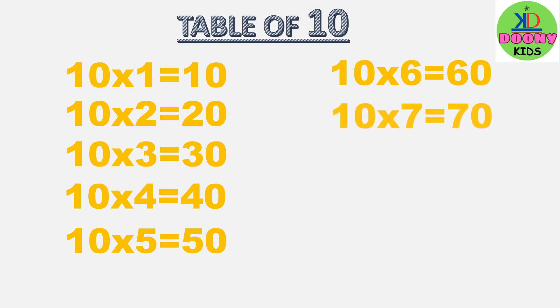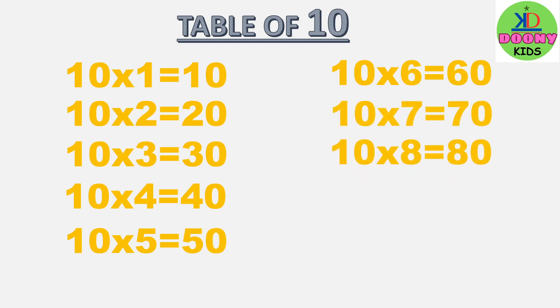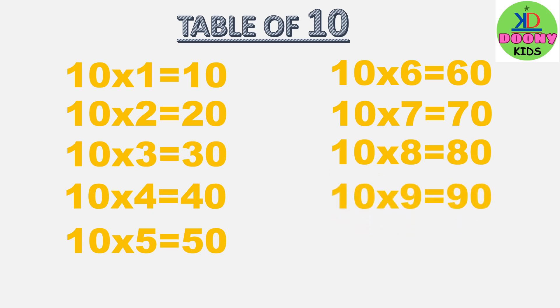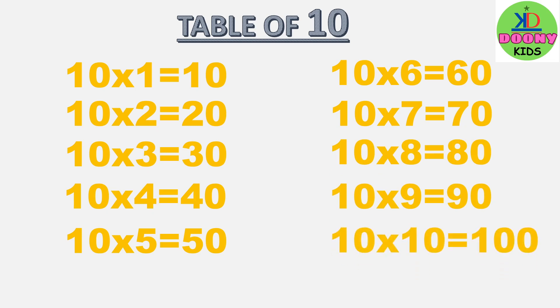10 sevens are 70, 10 eights are 80, 10 nines are 90, 10 tens are 100.